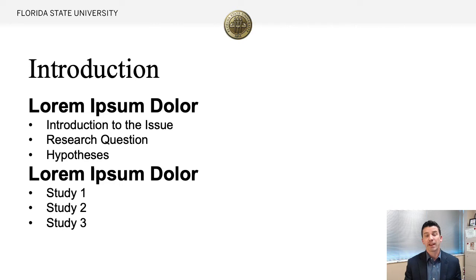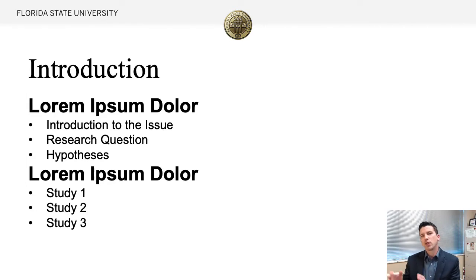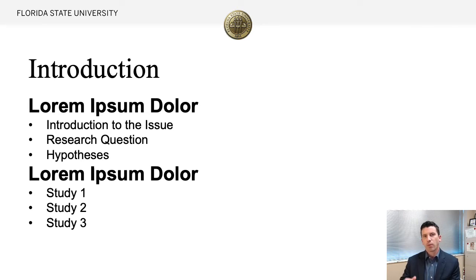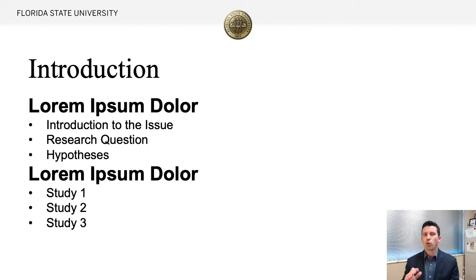I like to think of effective presentations occurring in three broad phases: tell me what you're about to tell me, tell me, and then tell me what you told me. So you're going to introduce the issues and give the relevant background information, then launch into your methods and results section where you flesh out your project and talk about specifically what you did to answer your research question. When you get to your conclusions and discussion section, that's when you'll wrap everything up and bring all of your storylines to hopefully a satisfying conclusion.